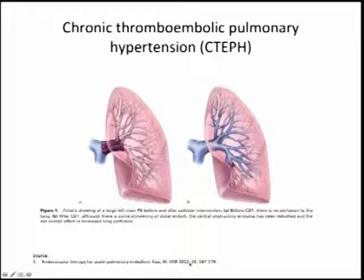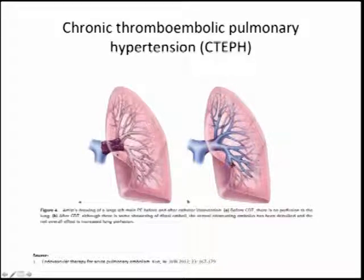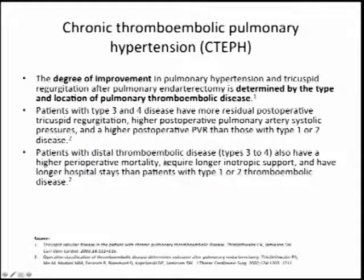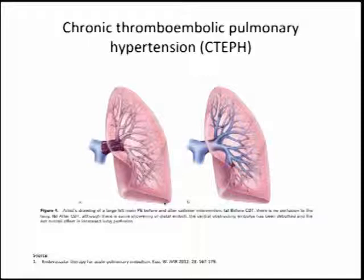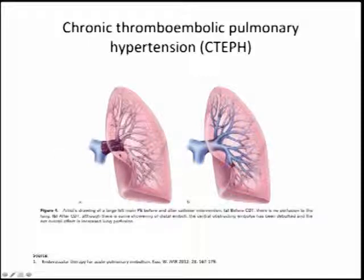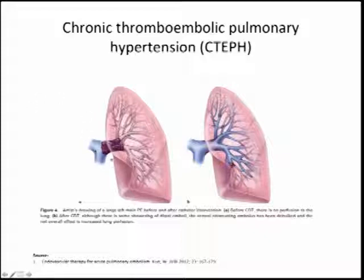Endarterectomy specimens are classified type 1 through 4. Type 3 and 4 — not type 1 which looks most severe — is actually associated with worse outcomes, higher morbidity and mortality. If catheter-directed or systemic thrombolysis fragments a type 1 clot and converts it to type 3 or 4 morphology, we may not be serving our patients well. In that case, if the patient can undergo surgery, surgical embolectomy might actually be the best long-term option.